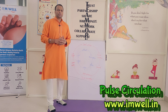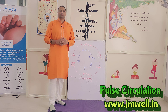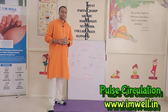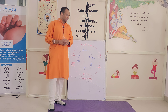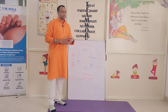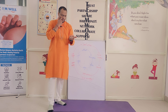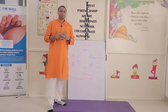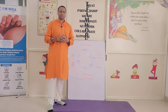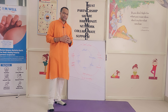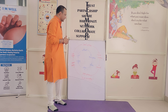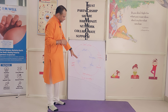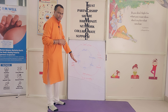Welcome friends. In the previous video you saw the left wrist and right wrist 6 pulse diagnostic points — 3 superficial and 3 deep on each side — and this is the way the pulse circulation works.